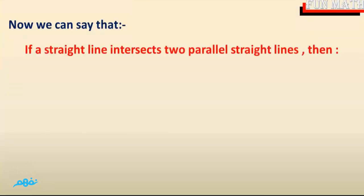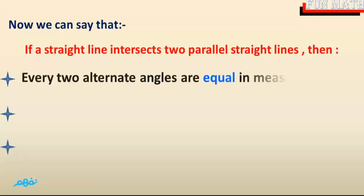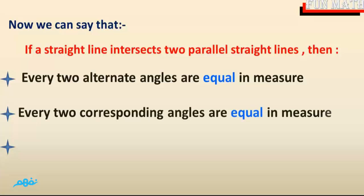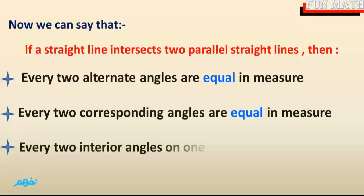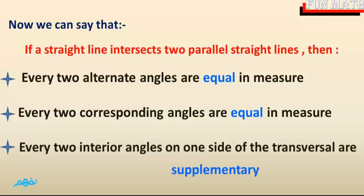Now we can say that if a straight line intersects two parallel straight lines, then: every two alternate angles are equal in measure, every two corresponding angles are equal in measure, and every two interior angles on one side of the transversal are supplementary.